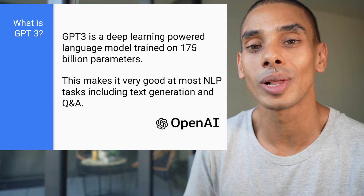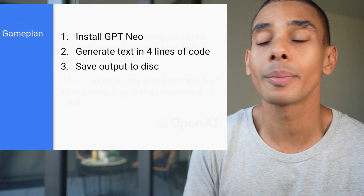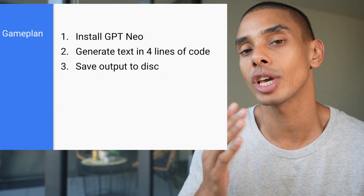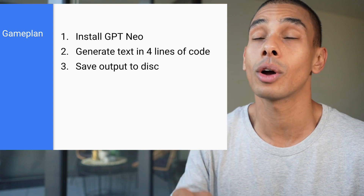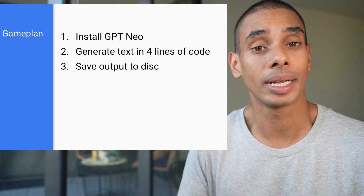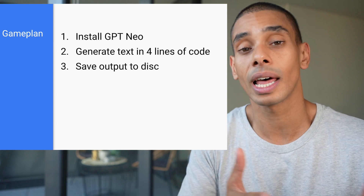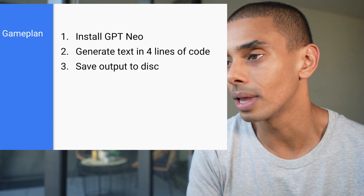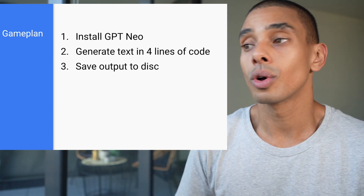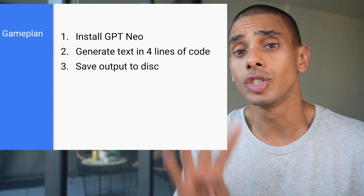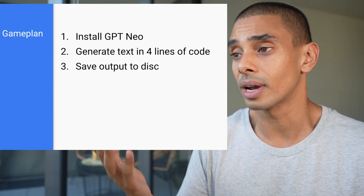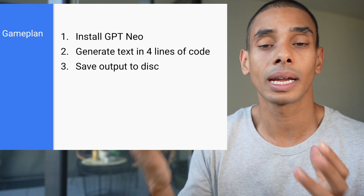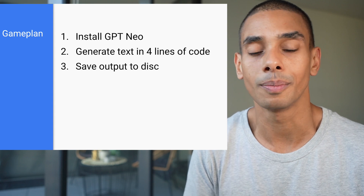Let's take a look at what we'll actually be going through. First, we're going to be installing GPT-Neo, which gives us a GPT-3 clone trained on 2.7 billion parameters that can definitely be fine-tuned. Once we've installed it, we're going to generate text in just four lines of code. We'll also save that output to disk so you can pick it up as a text file and leverage it later on.